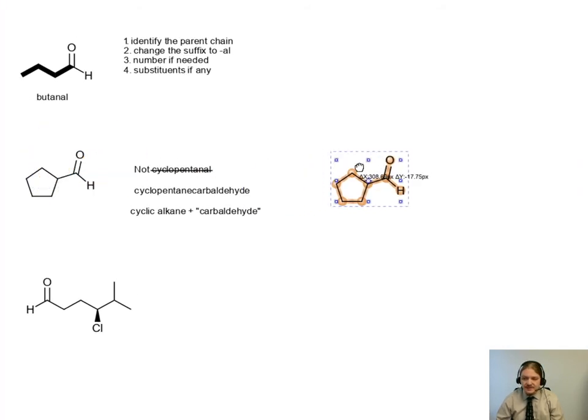And just to do a quick second example here. If this cyclopentanecarbaldehyde had another substituent on it, like we put a methyl group here. Not worrying about stereochemistry at the moment. We would number this compound so that the position where the aldehyde carbon is attached is one. And then we'd continue numbering from there. So this would be 2-methylcyclopentanecarbaldehyde.